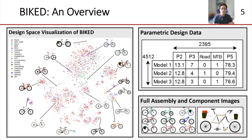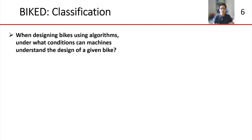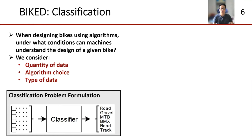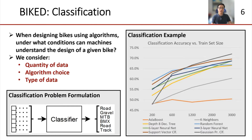With our remaining time, I'd like to address how BIKED can address some key research questions. The first question is: when designing bikes using algorithms, under what conditions can machines understand the design of a given bike? In particular, we seek to understand how the algorithm type, type of data, and quantity of data impact a machine learning algorithm's ability to understand a design. We address this question by formulating a classification problem — given a design, can a model correctly determine its labeled class? We carry out several experiments to evaluate a multitude of algorithms' classification performance on various amounts of different types of data.